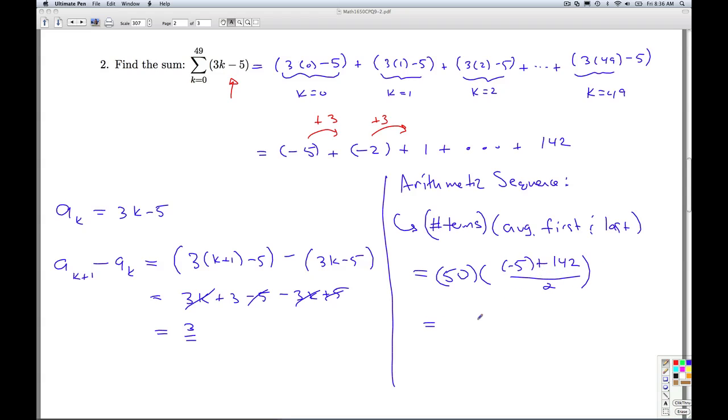So negative 5 and 142 is 137. I can divide the 2 into 50 and get 25. So it's 25 times 137. So I can go over here. I'm going to multiply that out old school.